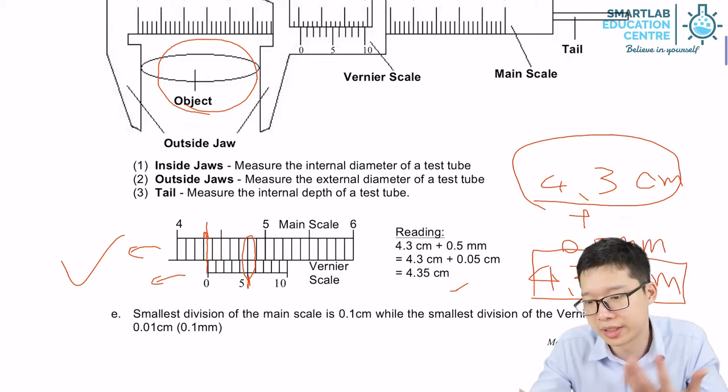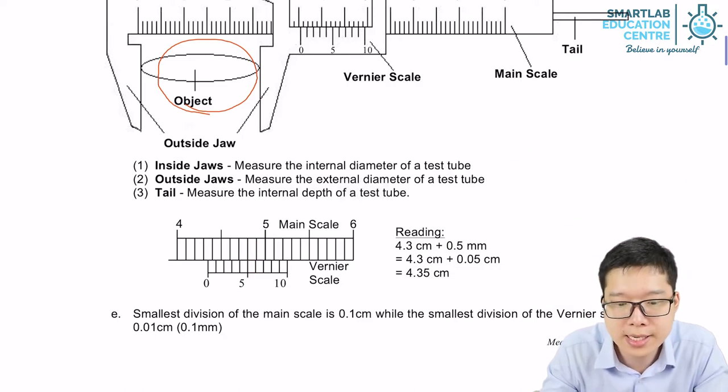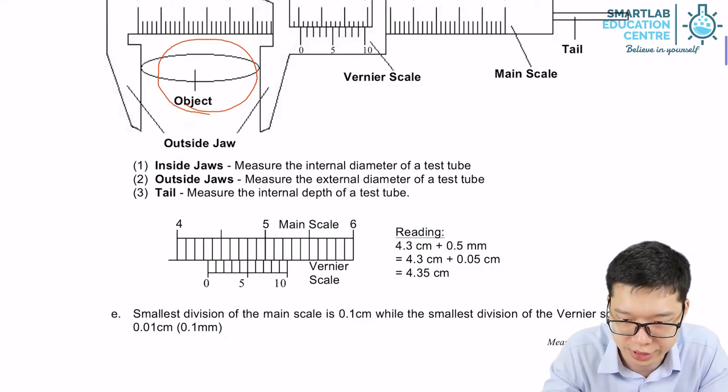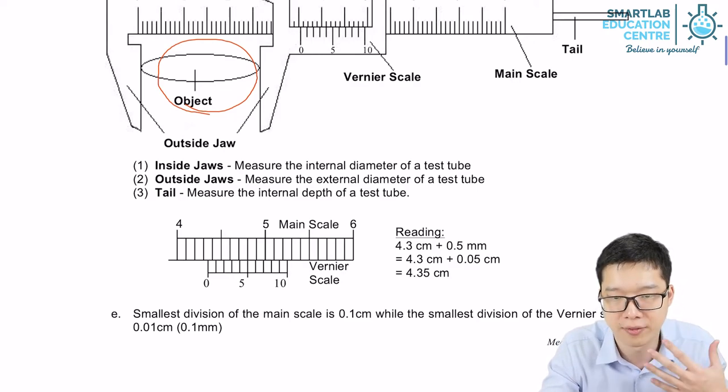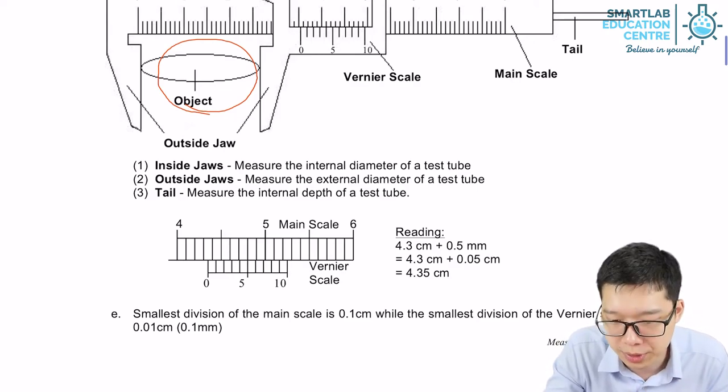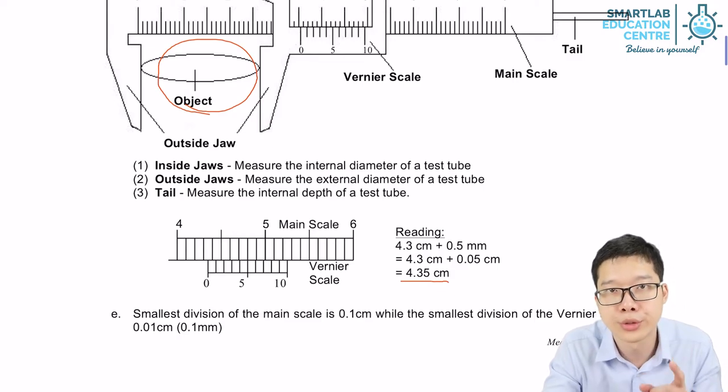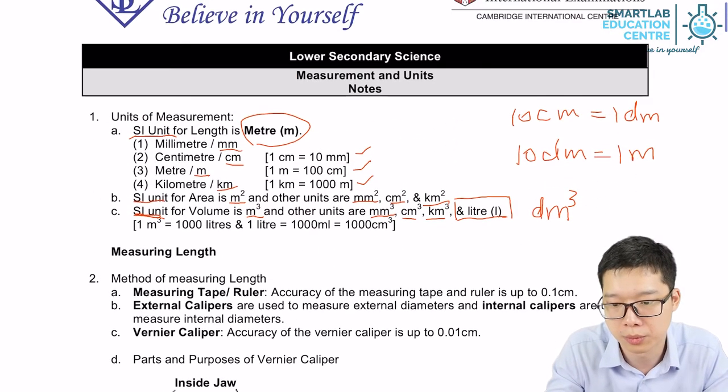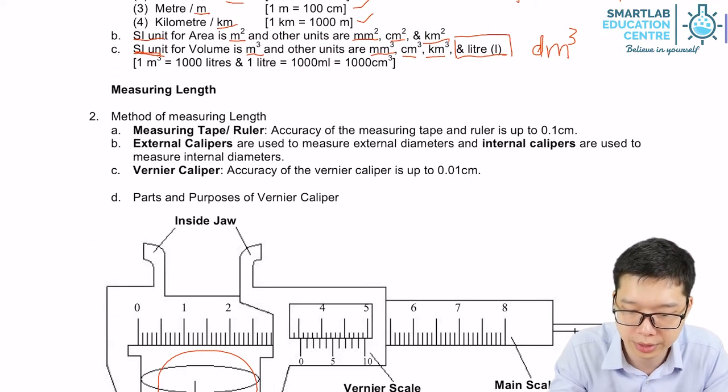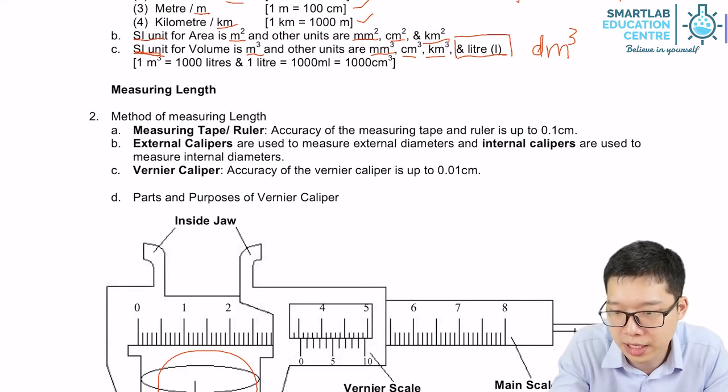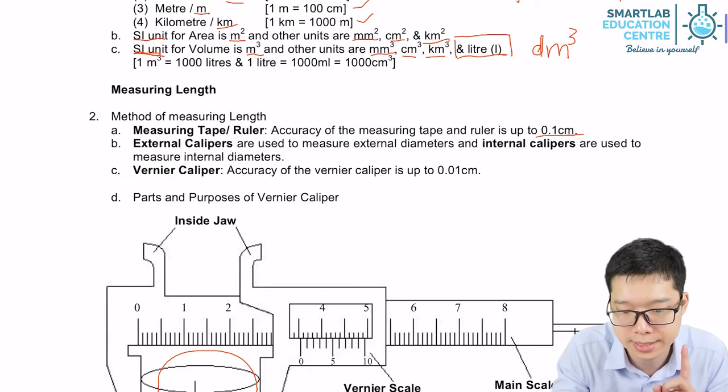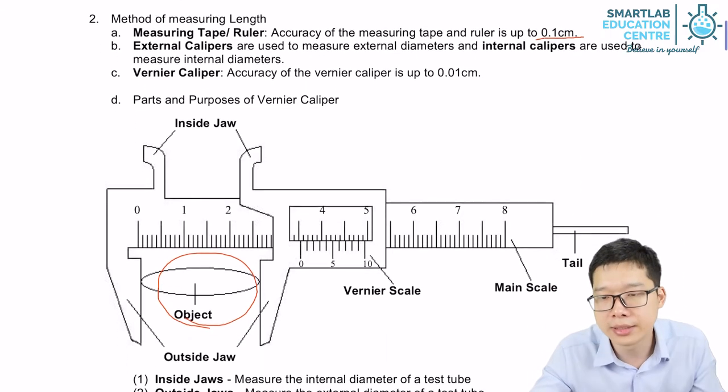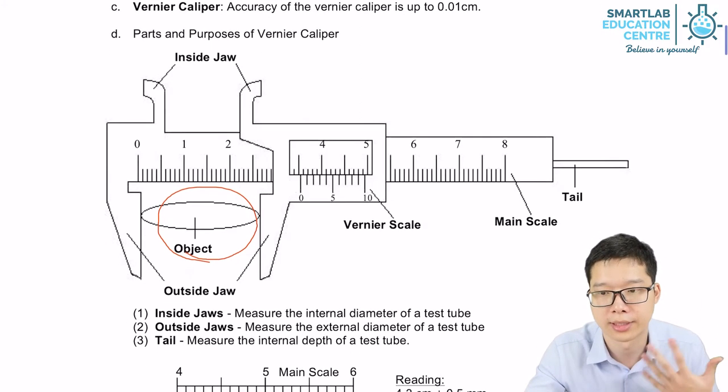By using the vernier caliper, you can achieve a precision up to 0.01 cm. Compared to a normal meter rule or ruler, which can only measure up to 0.1 cm, the vernier caliper is 10 times more accurate.